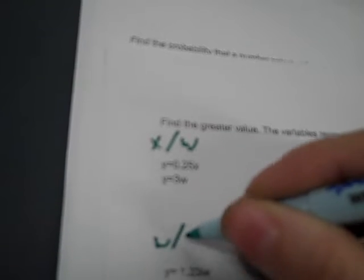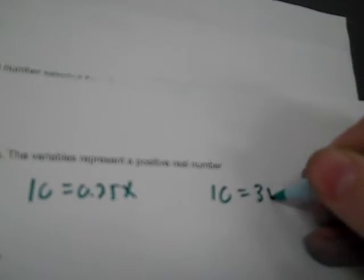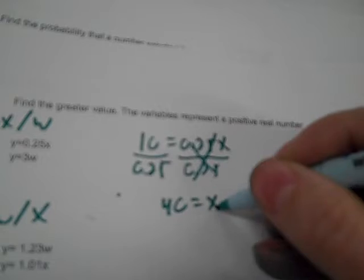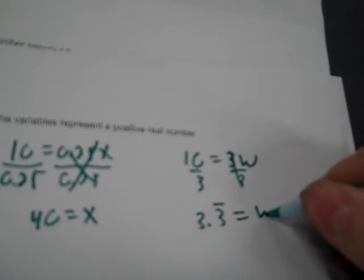Find the greater value. The variables represent a positive real number. Now, when you're finding the greater value, they're asking you about X or W. Here, they're asking about W or X. Here, X and M. Now, since Y is in both equations, I can fill that Y in with any number I want, both of them. So, let's pick 10. So, 10 is equal to 0.25X and 10 is equal to 3W. You can pick any number you want because Y is constant. Now, I divide by 0.25 and 10 divided by 0.25 is 40. So, 40 is X. Here, I divide by 3 and 10 divided by 3 is 3.3 repeating. Now, 40 is larger and that's X. So, X is a larger value.